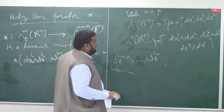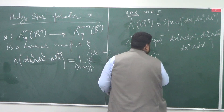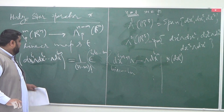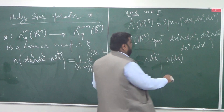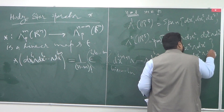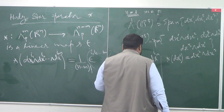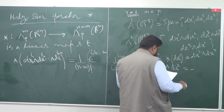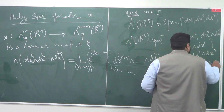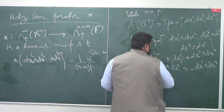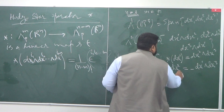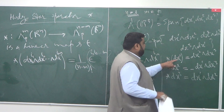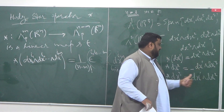We saw that if you apply star on dx1, using this definition you get on the other side dx2 wedge dx3. And if you apply star on dx2, you get minus dx1 wedge dx3, which is the same as dx3 wedge dx1. And if you apply star on dx3, you get dx1 wedge dx2. You can make sense of it: if 1 is here, you have 2 and 3 there; if 2 is here, you have 1 and 3; if 3 then 1 and 2.